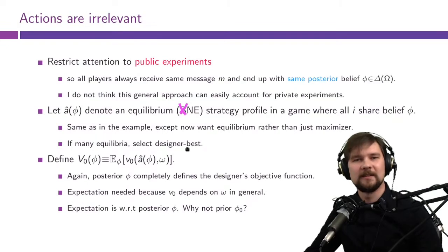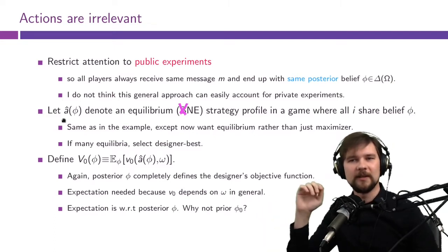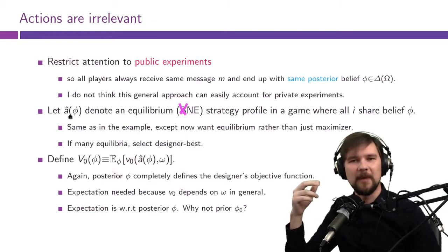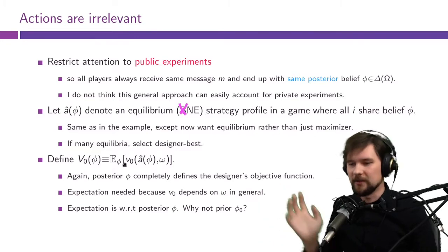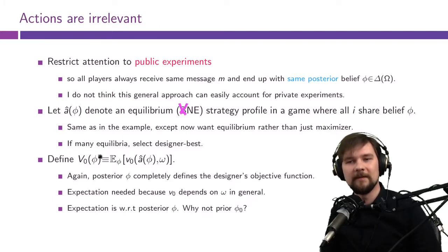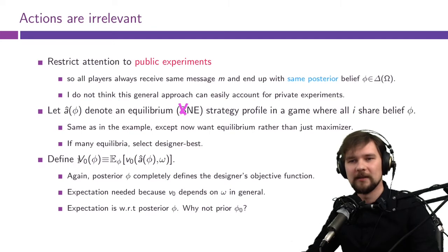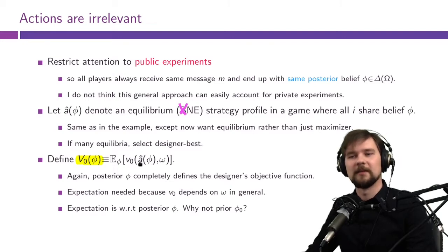The first step we can undertake in solving the problem is to get rid of actions completely. So â(φ) is a more or less mechanical mapping from beliefs φ to the payoffs v0 and payoffs of other players. Once you can figure out what equilibrium they play given any public belief φ, you can figure out what your payoff as the designer will be given any public belief φ that you induce in the players. So we define this big V0(φ) as the expected payoff of the designer from inducing belief φ in the players, meaning that all players play according to â(φ).